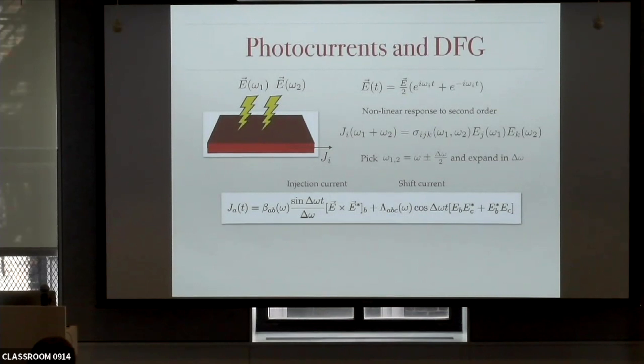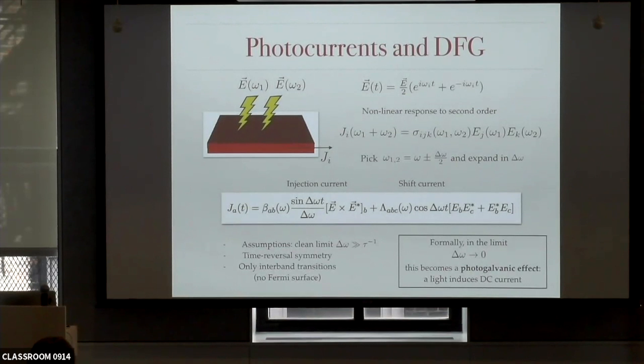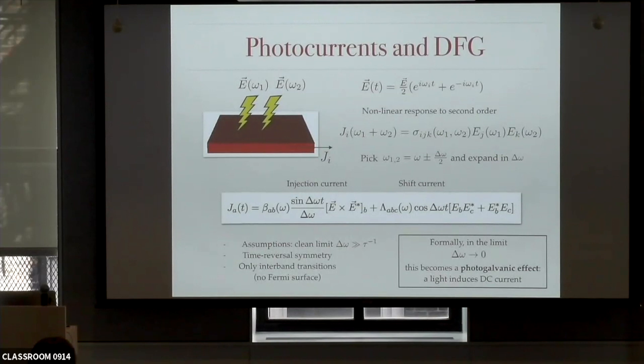The hypotheses we use to derive this are: first, this is in the clean limit, so tau is formally infinity — the scattering time — so there's no scattering or dissipation. This simple equation is only for the case of time reversal symmetry; if you break time reversal there are more terms. For now I am only considering interband transitions, so there's no Fermi surface. Even though Weyl semimetals always have a Fermi surface, let me focus on interband pieces for now. And as I was saying, when delta goes to zero, this is the photogalvanic effect.